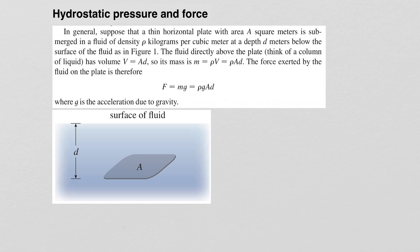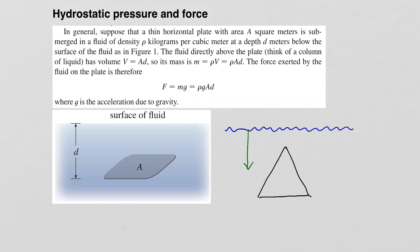What can get interesting about these problems is that if you have a shape submerged in water, as you go down in depth, the area being acted upon by the force is changing because the shape is not uniform. So this whole process comes down to expressing the area of a slice of that shape at a particular depth.